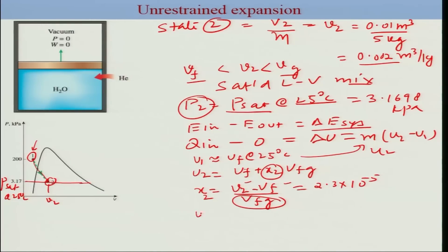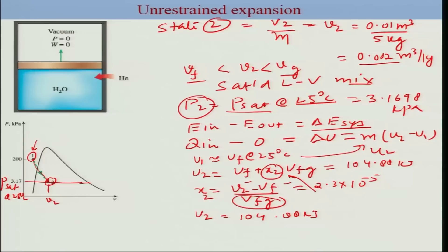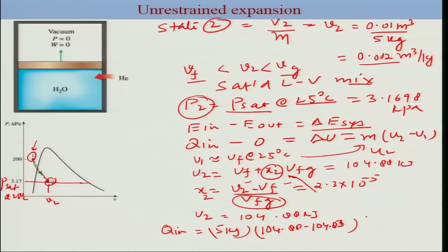X2 works out to 2.3 times 10 to the power minus 5. Plugging in U-f and U-fg from the table, U2 equals 104.88 kJ/kg. Q-in equals M times (U2 minus U1) equals 5 kg times (104.88 minus 104.83), which equals 0.25 kilojoules. Since Q-in is positive, our assumption is correct — we need to supply energy to the system as heat so that the final temperature remains at 25°C.